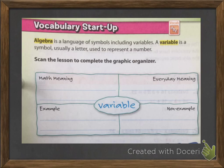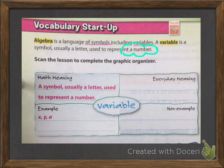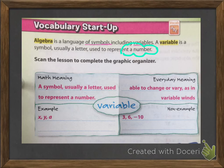Algebra is a language of symbols including variables. A variable is a symbol, usually a letter, used to represent a number — it's important that you know it's used to represent a number. The math meaning of a variable: it's a symbol, usually a letter, used to represent a number; examples are X, Y, and A. The everyday meaning of variable means it's able to change or vary, as in variable winds. A non-example of a variable would be 3, 6, and negative 10, because those are all numbers — variables have to be letters.